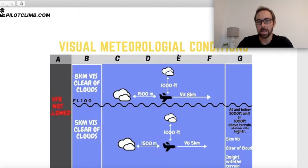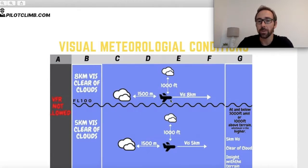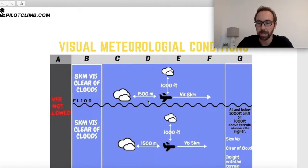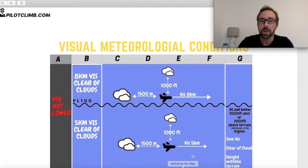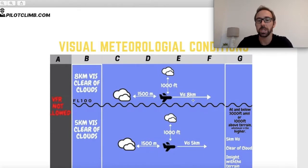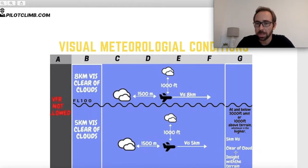For airspace class Golf, you need 5 km visibility minimum, clear of cloud, and in sight of the terrain at all times. If conditions fall below any of these minimums, you are automatically in IMC — there's no need to specify IMC separately in the table. The table only describes VMC because anything below those values is IMC by definition.